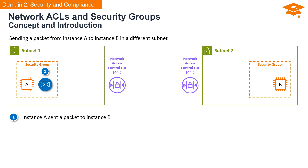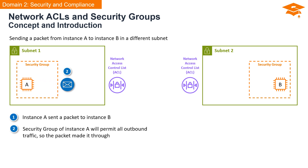Picture the immigration officers who examine Steve's passport as network access control lists. These network access control lists act as the gatekeepers, just like the immigration officers, controlling what traffic is allowed in and out of each subnet. Similarly, the apartment and hotel security access control can be thought of as security groups. By default, the security group of instance A will permit all outbound traffic, so the packet made it through.